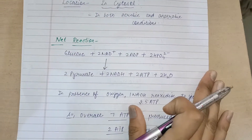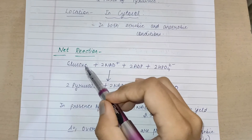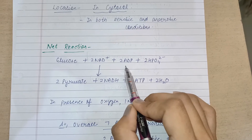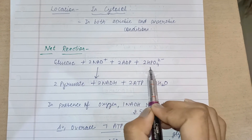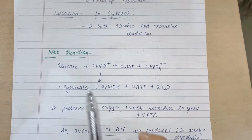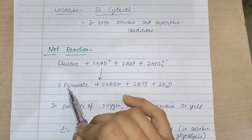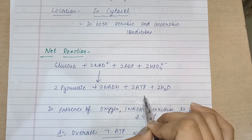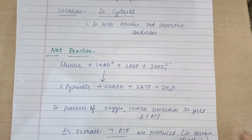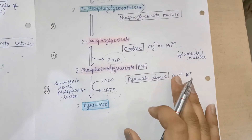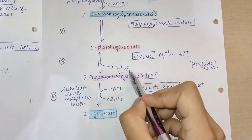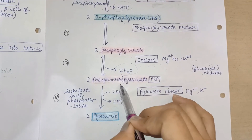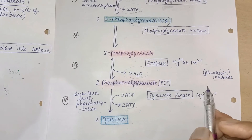The overall reaction of glycolysis is: one molecule of glucose + two NAD⁺ + two ADP + two HPO₄²⁻ → two molecules of pyruvate + two NADH + two ATP + two H₂O. Water is removed during the ninth step during the conversion of 2-phosphoglycerate to phosphoenolpyruvate.